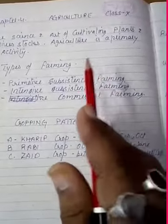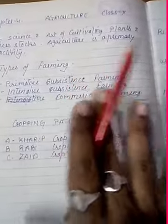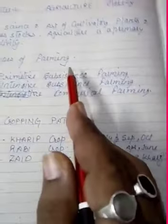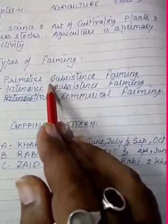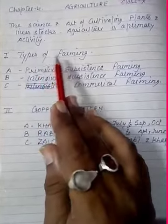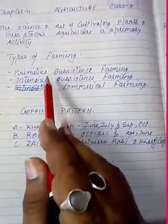Agriculture is done in the way of farming. This full chapter is mentioned in your NCERT book on page number 34. Now we will study the short notes which are very important for learning. Agriculture with its types of farming — the farming is of three main types.